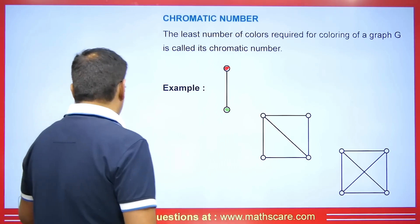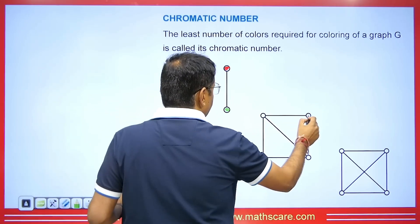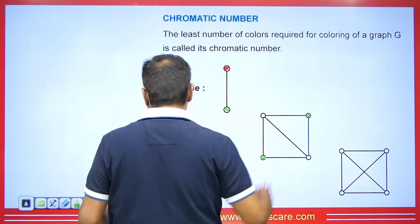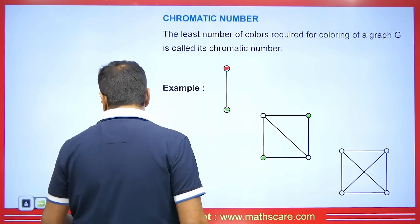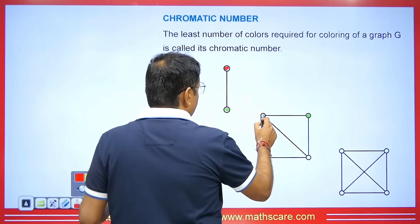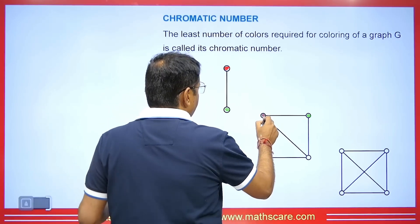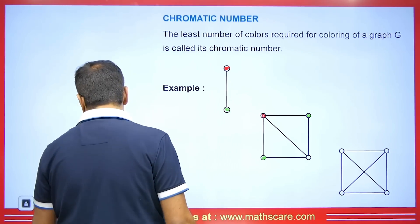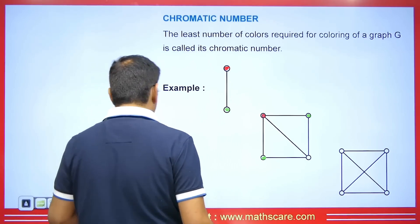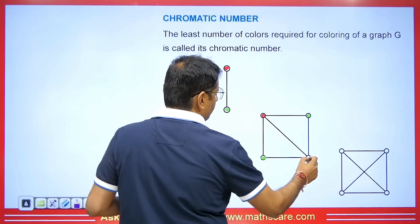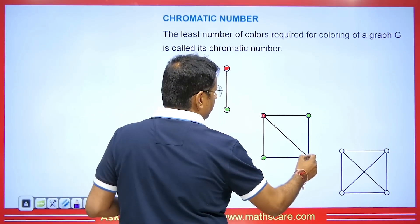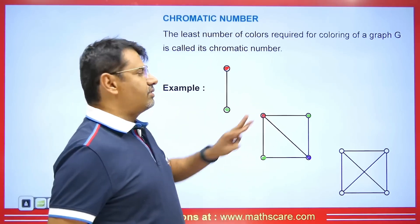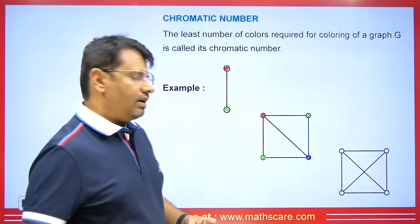Similarly, for this case, if I choose a color I can also use it here because these vertices are not connected. I took red here; now for the connected vertex I have to take a different color. Let's say I choose purple — we are using three colors for coloring here, which gives us a chromatic number of three.